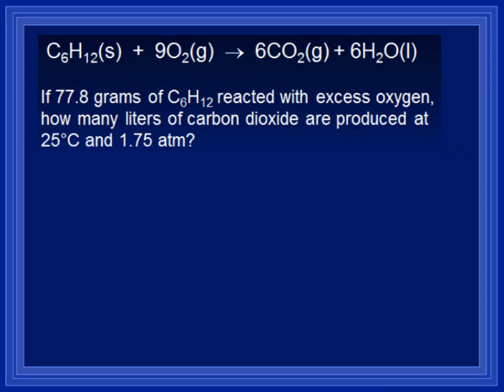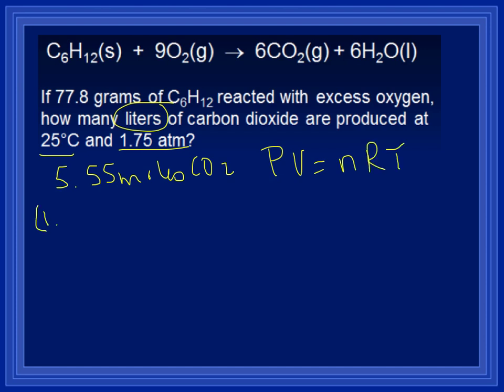So now we're going to use this fact that we just calculated, there's 5.55 moles of CO2, along with the temperature and the pressure in order to solve for the liters using PV equals NRT, the ideal gas law. The pressure we know is 1.75. The volume we're trying to find, the moles we solved for just a second ago, 5.55 moles. R, we're going to use the 0.0821 since we are in ATMs. And the temperature, 25 plus 273 equals 298.